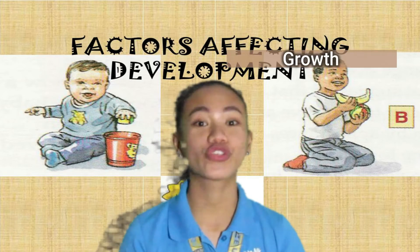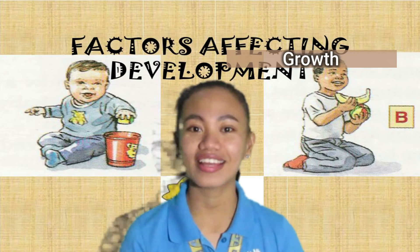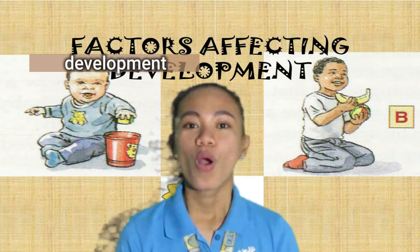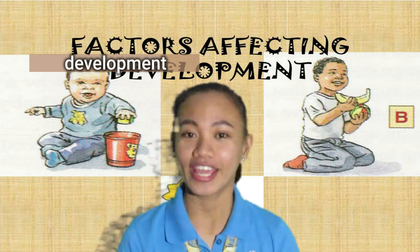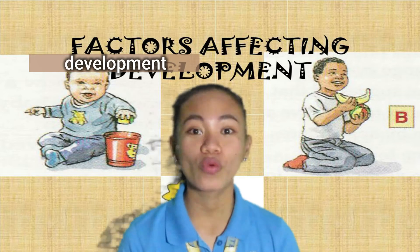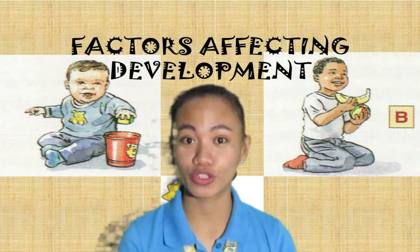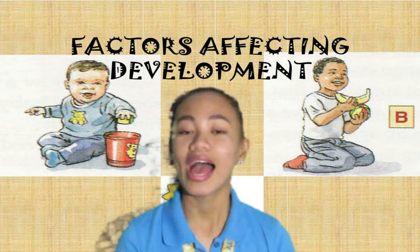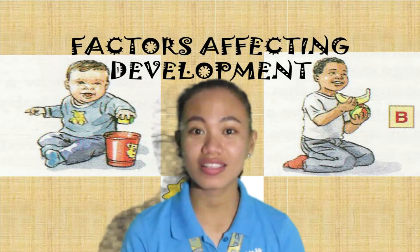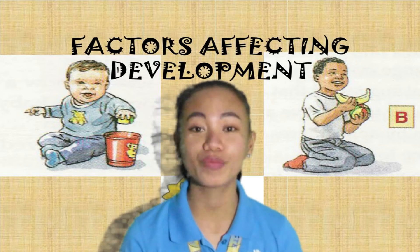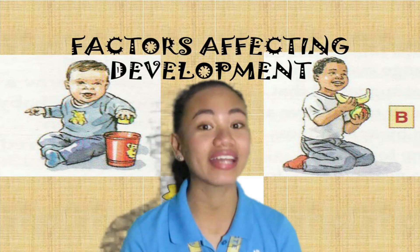Growth refers to the incremental changes in physical characteristics such as height, weight, size, etc. While development refers to qualitative changes to growth in an orderly and meaningful fashion which results in maturity. Growth and development contribute to each other, are inseparable, and occur simultaneously. For example, most babies, by the time they grow up to be 8 months old, can weigh around 8 to 10 kilograms and can sit up.